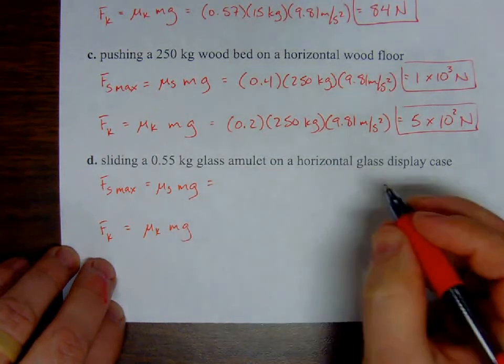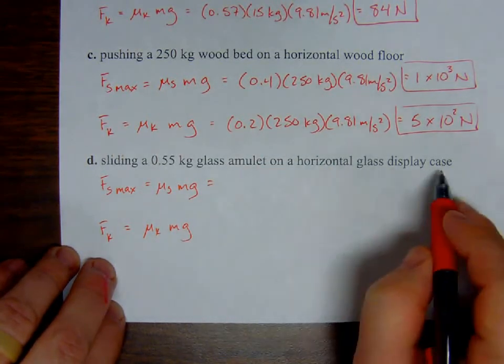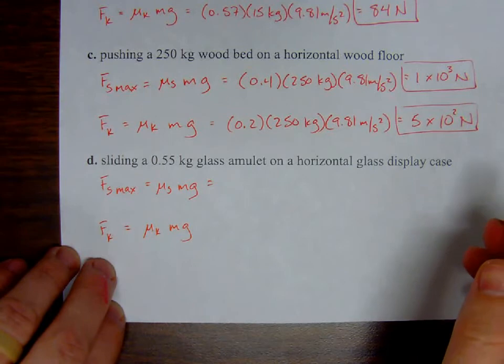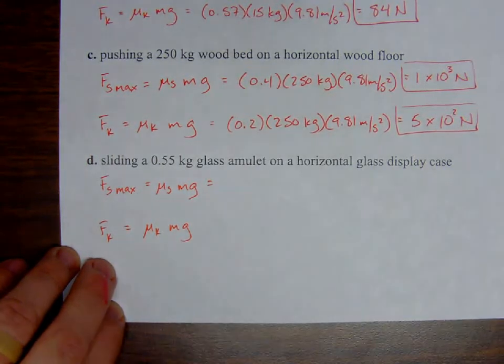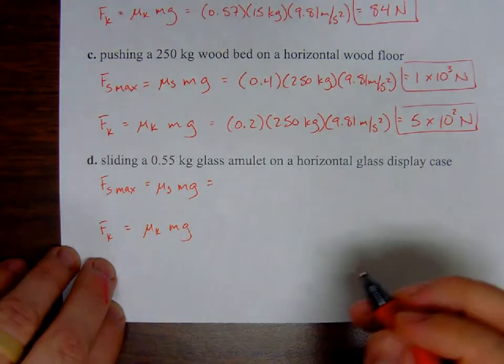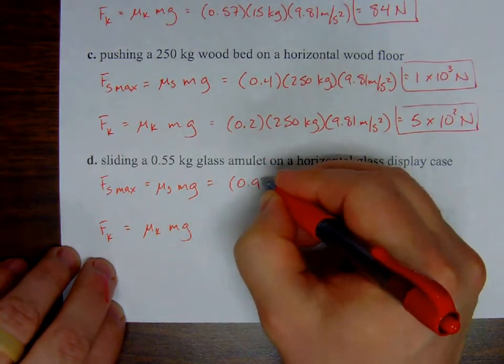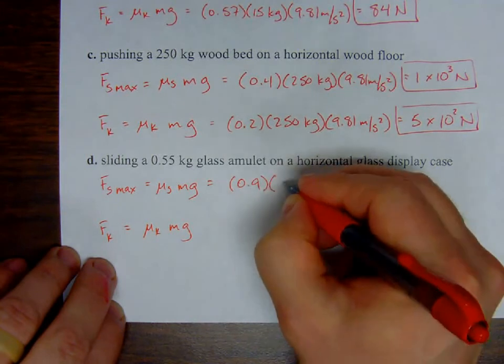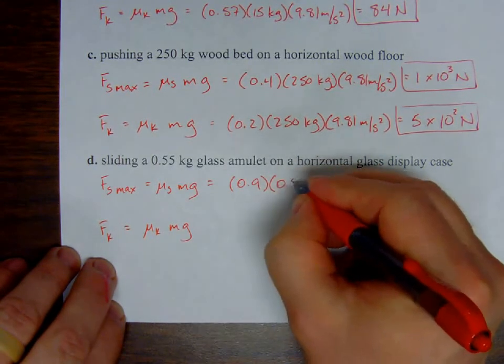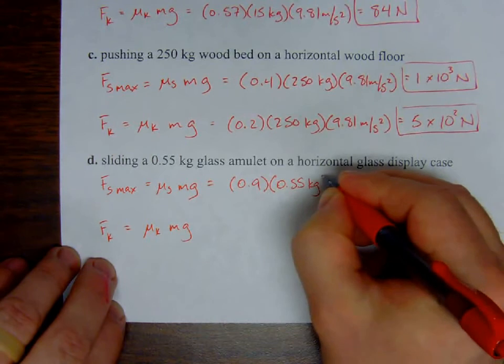0.4 on the kinetic, coefficient of kinetic friction, where's my mass, mass is 0.55 kilograms still, 9.81 meters per second squared, and then I'm going to go with, again, one significant figure, so my final answer is going to be two newtons.